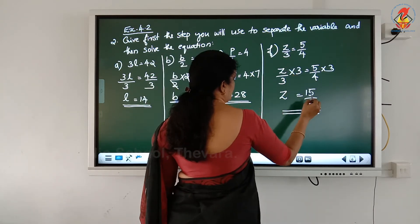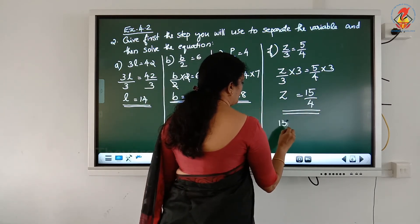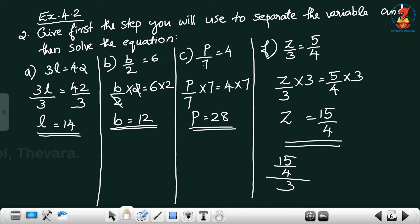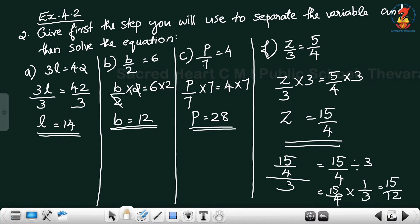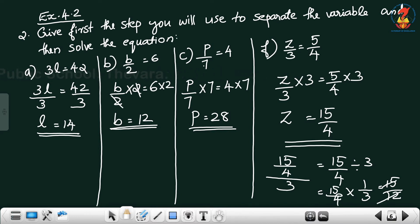To check: substitute 15/4 in the place of Z. That means Z by 3 becomes 15/4 divided by 3, which equals 15/4 multiplied by 1/3, equaling 15/12. Simplify: 15 divided by 3 is 5, 12 divided by 3 is 4 — giving 5 by 4. LHS equals RHS, confirmed.